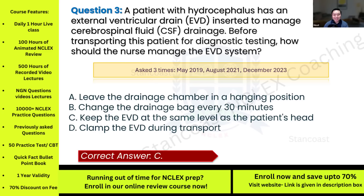Option D — clamping the EVD during transport — would stop CSF from draining, causing a dangerous buildup of pressure inside the skull, raising the patient's ICP and leading to serious complications. To recap: when managing an EVD for a hydrocephalus patient, maintain the EVD at the same level as the head during transport to ensure proper drainage and avoid complications such as brain herniation or increasing ICP.